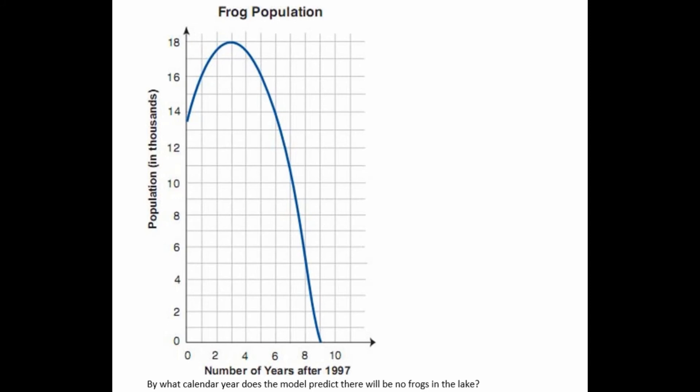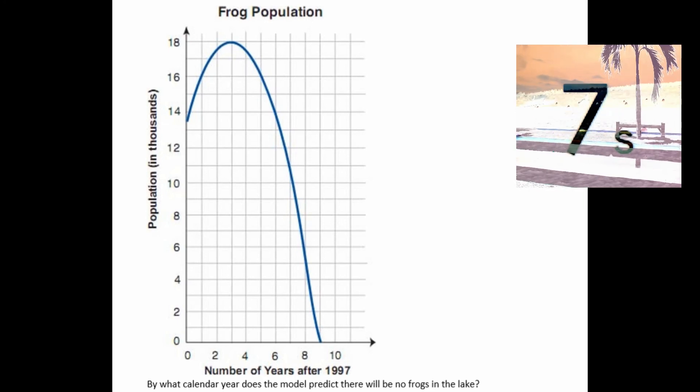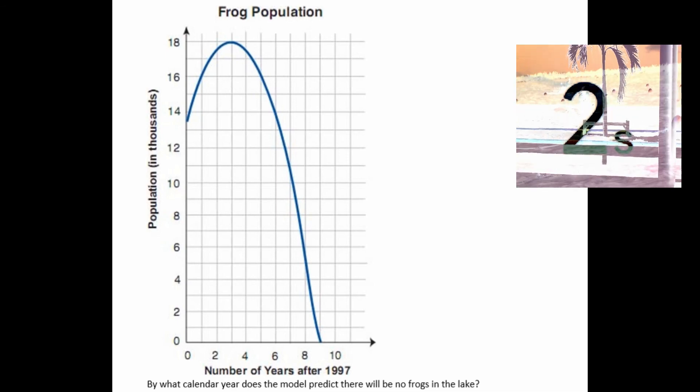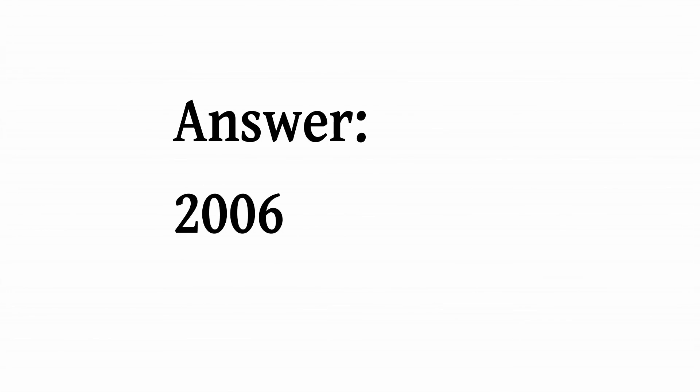Frog population — population in thousands on the vertical axis and number of years after 1997 on the horizontal axis. The question is: by what calendar year does the model predict there will be no frogs in the lake? This is another confusing question, and the answer is 2006.